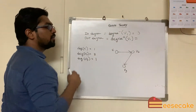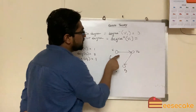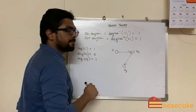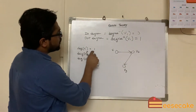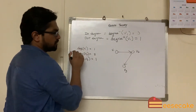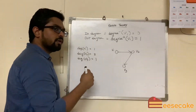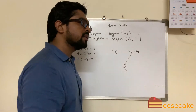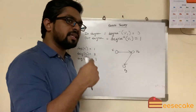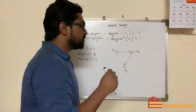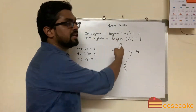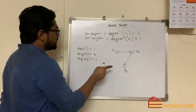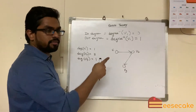Out-degree is denoted by the positive sign, say degree-plus of v1. How many edges are outgoing? One edge is going out, so degree-plus of v1 equals one. If somebody asks the total degree of a vertex in a directed or undirected graph, it has to be in-degree plus out-degree. But if somebody asks separately for in-degree or out-degree, you count like this.